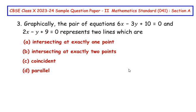Section A, which is multiple choice questions where each question is of one mark. Now this question is from pair of linear equations in two variables chapter. Graphically, the pair of equations 6x minus 3y plus 10 equal to 0.